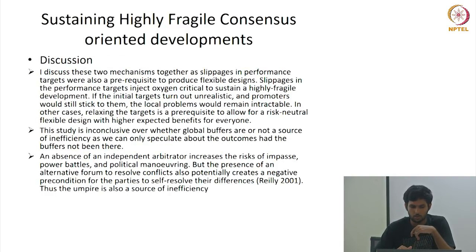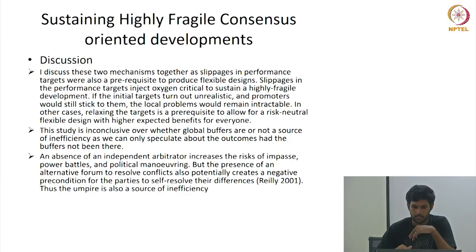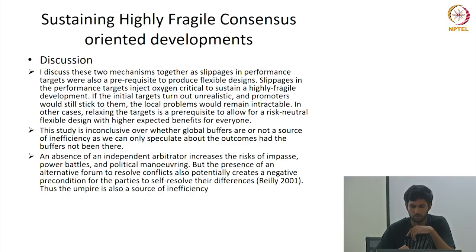Slippages in performance targets were also precursors to producing flexible design. Slippages in performance targets inject oxygen critical to sustaining a highly fragile development. If initial targets turn out to be unrealistic and the promoter sticks to them, local problems would remain intractable. In other cases, relaxing targets is a prerequisite to allow for a risk-neutral flexible design with higher expected benefits for everyone. However, the absence of an independent arbitrator increases the risk of power battles, while the presence of an umpire also potentially creates a negative precondition for parties to self-resolve — thus umpires are also a source of inefficiency.